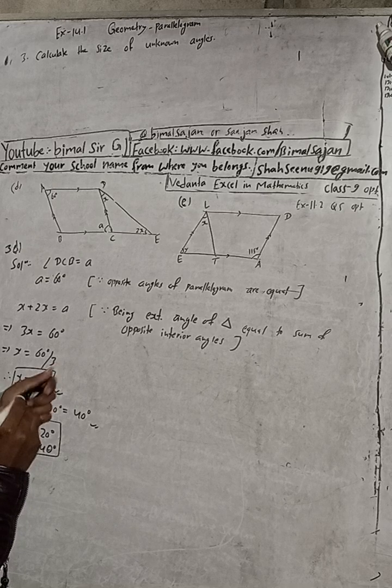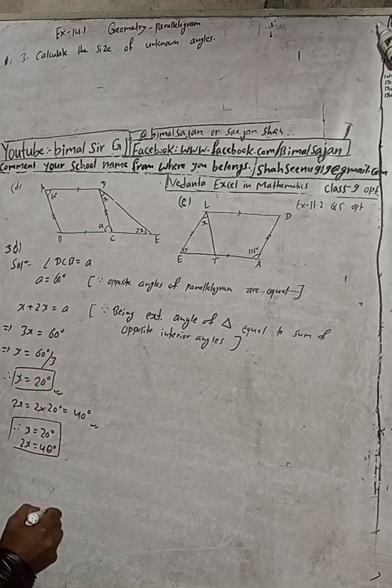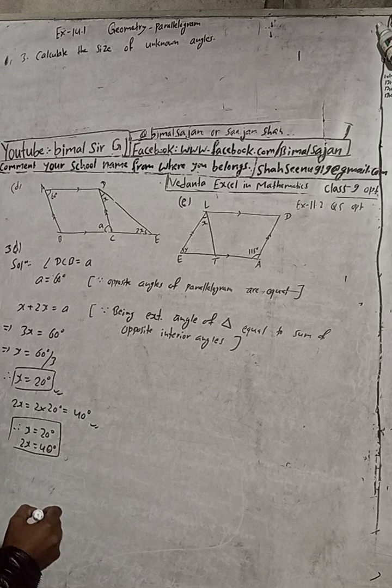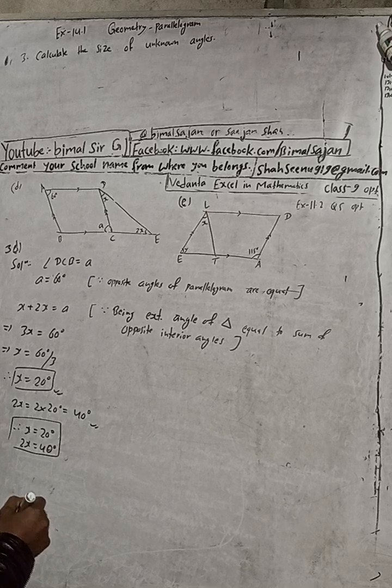In the book, in the book 3D ABCD, yeah, x is equal to 20 degrees and 2x is 40 degrees, correct.